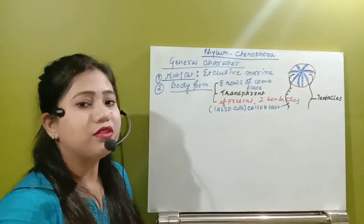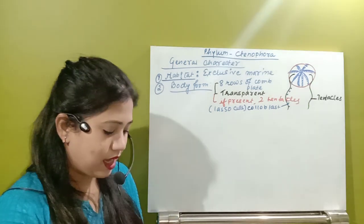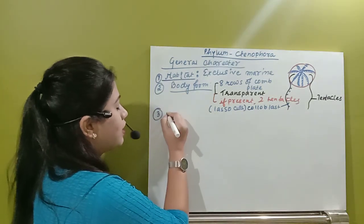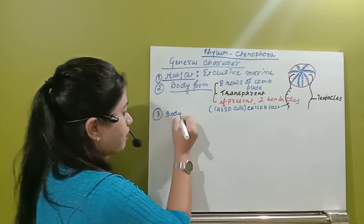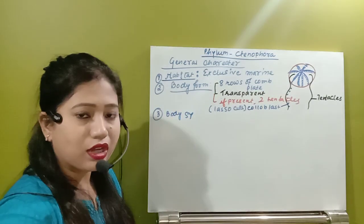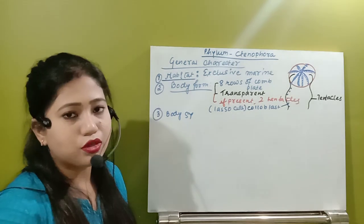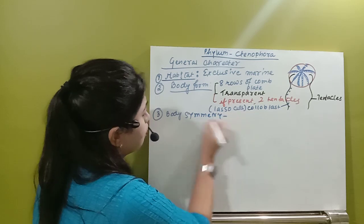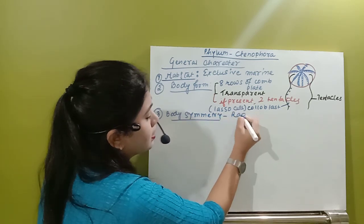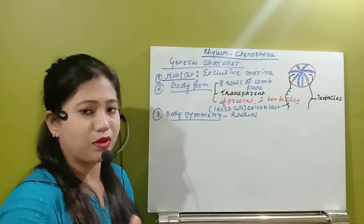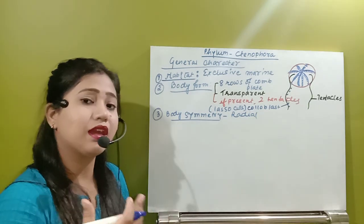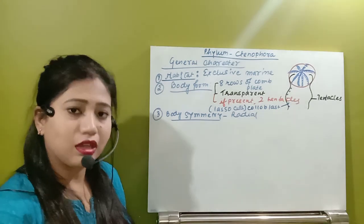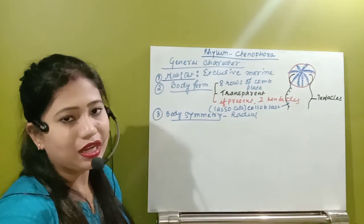The next characteristic is about their body symmetry. This organism will have radial symmetry — many planes can pass through the midpoint, so the organism is radially symmetrical.